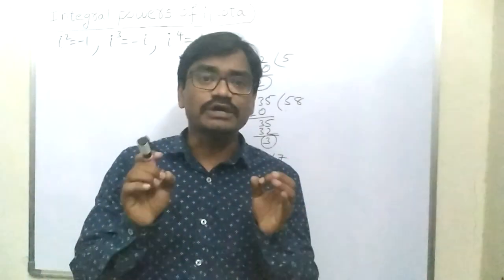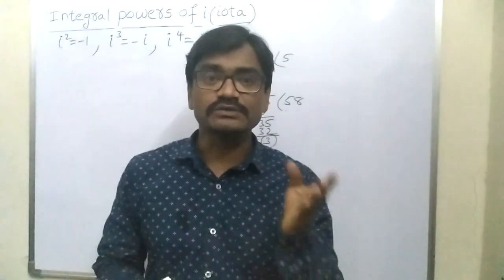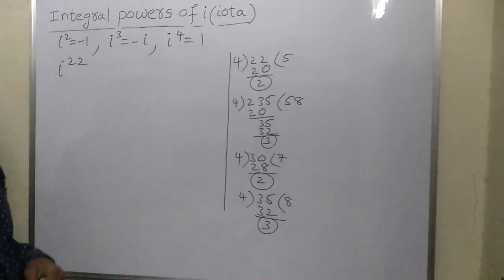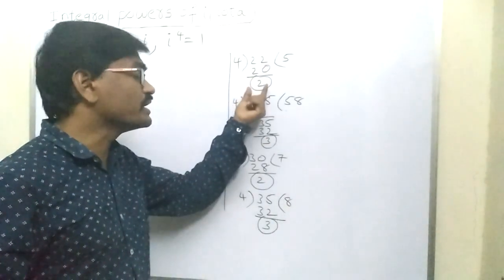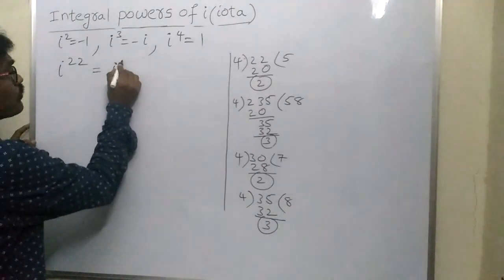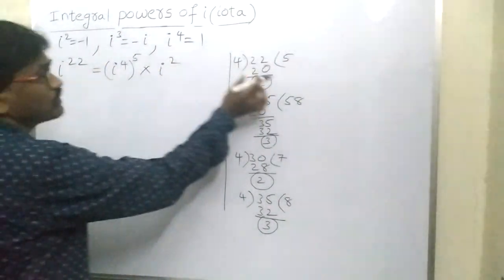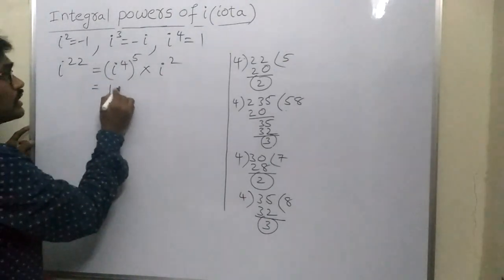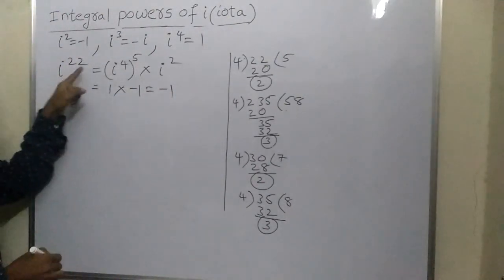If the power of i is not a multiple of 4, how can we find their values? First of all, i²²: since i⁴ = 1, on dividing 22 by 4 you get quotient 5 and remainder 2. Write down i²² as (i⁴)⁵ × i². Write down i⁴ value as 1, you get 1⁵, which is 1, and i² value is minus 1. Therefore, i²² = minus 1.